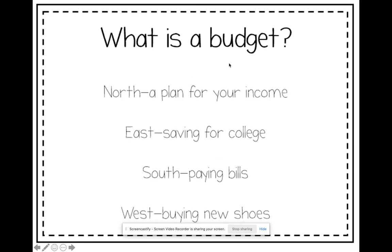What is a budget? Options are: a plan for your income, saving for college, paying bills, or buying new shoes. A budget is a plan for your income. Saving for college, paying bills, and buying new shoes might all fit in your budget, but a budget itself is a plan for your income.